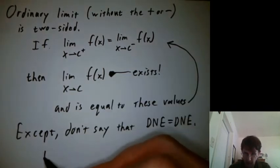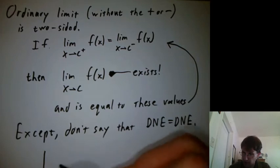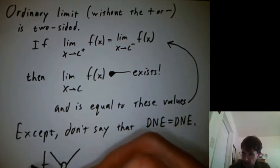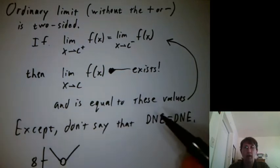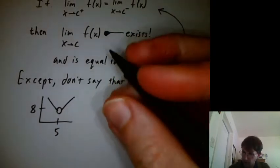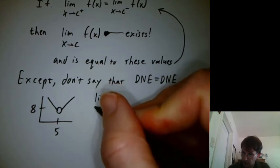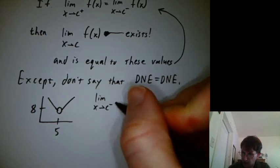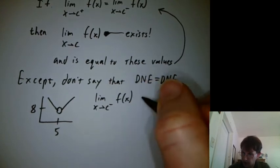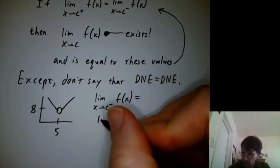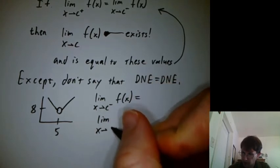Let's do a quick example here. Let's still say we're at five and we've got something like that. What would you say is the limit as x goes to c minus? What's the limit as x goes to c plus?